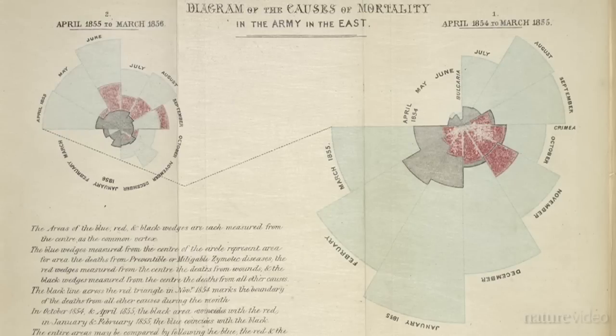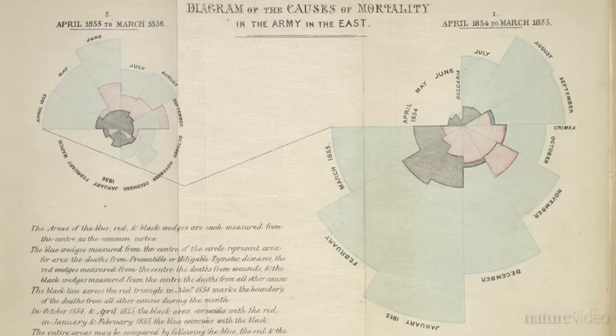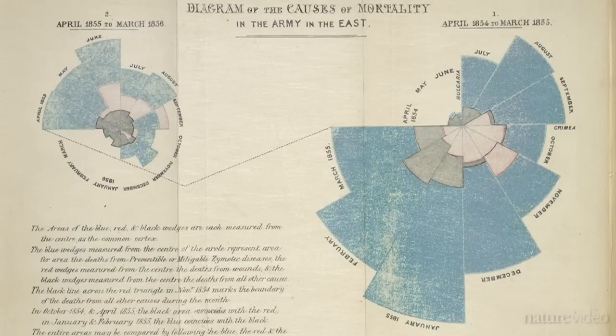And during the Crimean War she gathered data about how people were dying. The red on this diagram is the wounds, and in blue here that's all preventable diseases — basically acquired in hospital conditions.